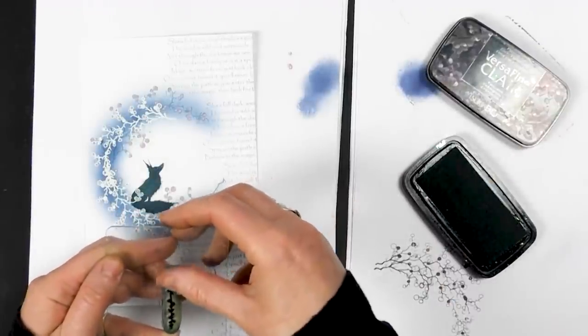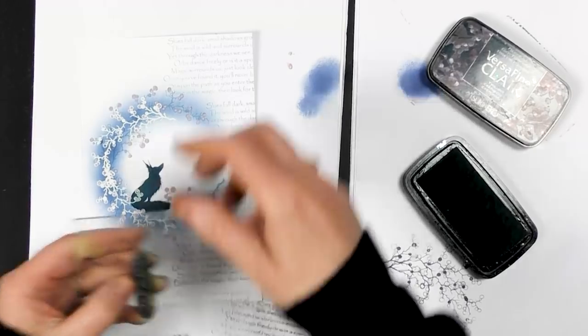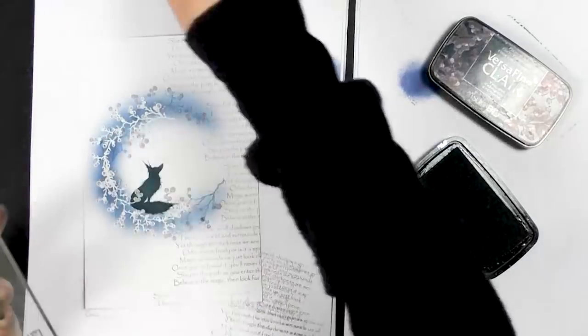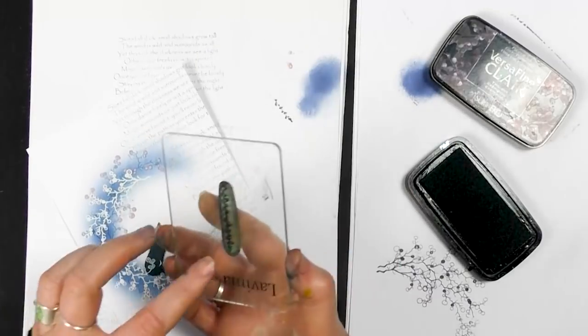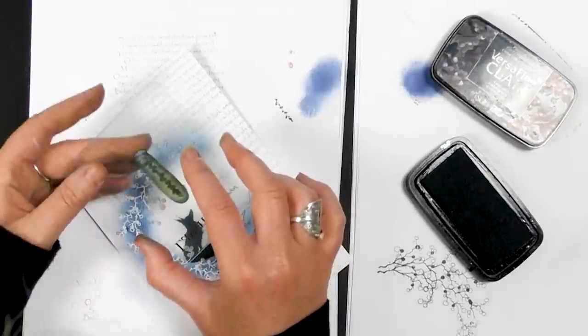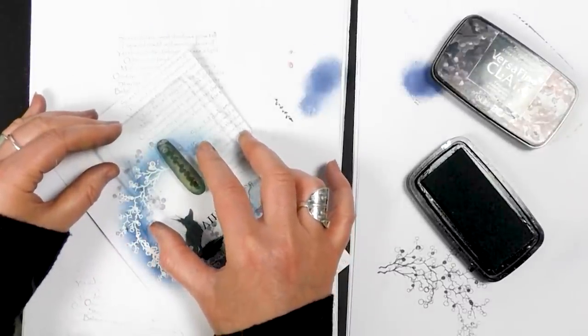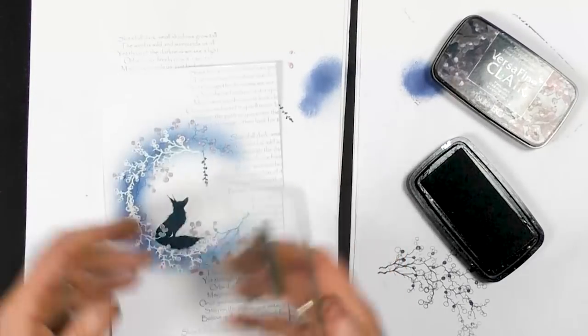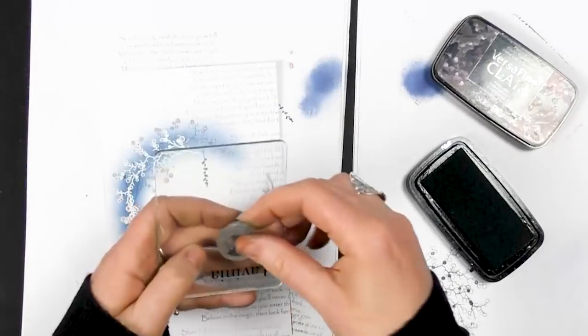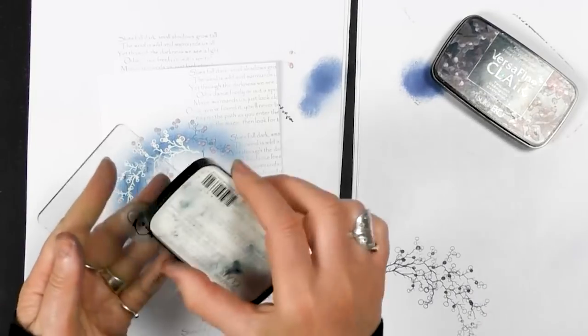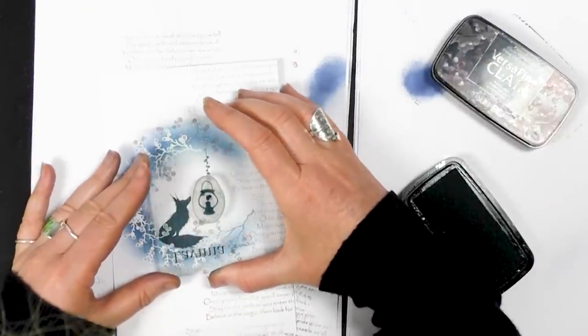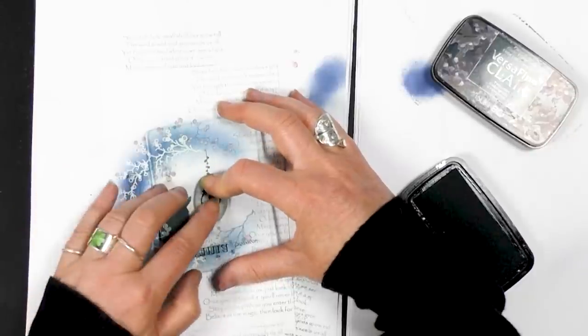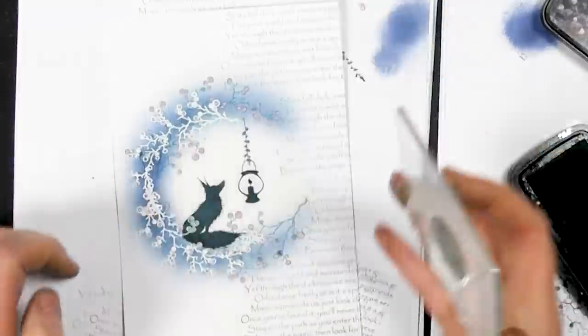Now I've used one of our little stamps here that comes in a foliage set that we've got, and there were so many people that was asking us for the individual ones that we decided to put them all together in a set. And now I'm just going to pop that there, and we've got our little lamp. And I'm going to do that hanging like so.